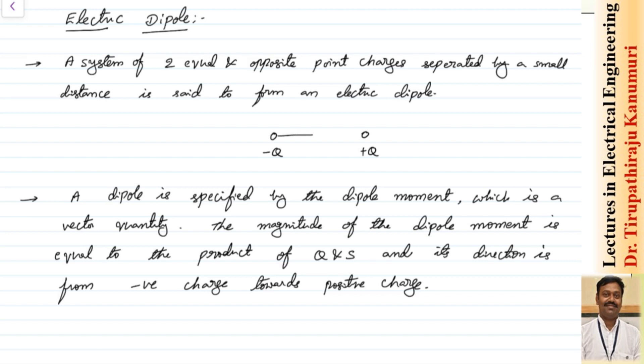Let us assume the distance between them is very small — they are separated by a very small distance when compared to any other distance which you are taking in your numerical. So then we can tell that it is forming a dipole. This is called a dipole.